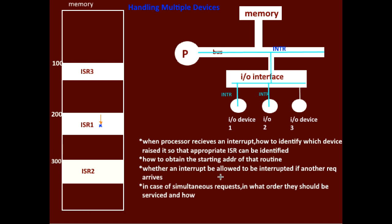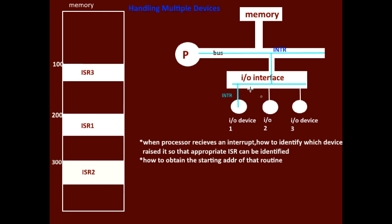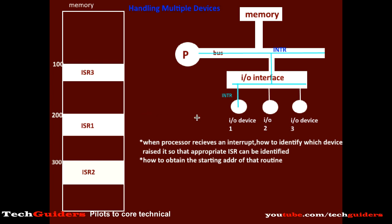All these issues are handled in different ways in different systems. First of all, when the processor receives an interrupt, how will it identify which device has raised the interrupt so that the appropriate interrupt service routine can be identified by obtaining the starting address of that ISR? One way is to use a software-based approach called polling the devices. Whenever an interrupt request is raised by an I/O device, that information will be updated in its status register. One simple way to identify the requesting device is by comparing the status bit information of all the devices in a particular order. The interrupt from any device can be directed to a common interrupt service routine whose address is already known to the processor, and that common routine keeps the code to compare the status bit information of all devices in order.